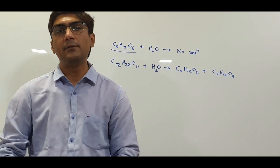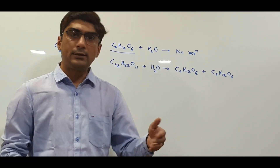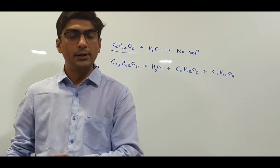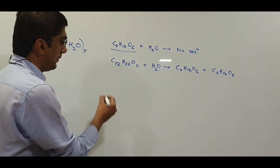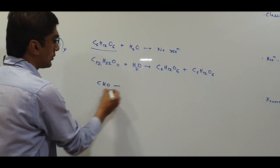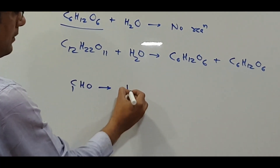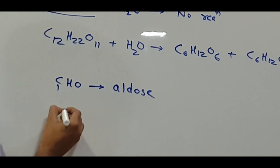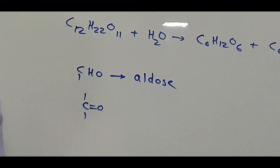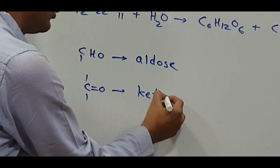Another type of classification depends upon the functional groups present in the molecules. They are classified as aldoses or ketoses. If an aldehyde group is present, they are termed as aldose. If a ketone group is present, they are termed as ketose. For example, glucose has a CHO group, so glucose is an aldose molecule. But if there is a C=O group as present in fructose, then we call it a ketose.